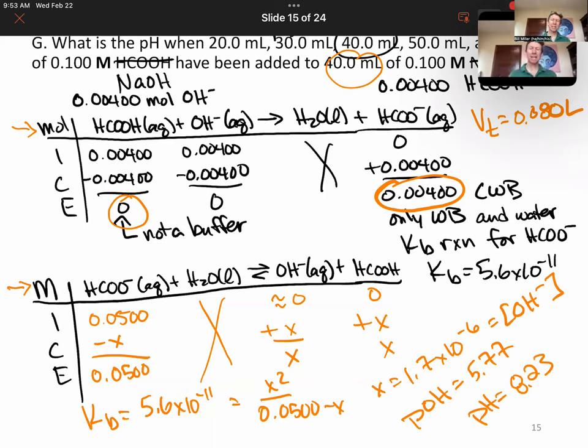And our pH is 14 minus that. I get 8.23. That tells me that at the equivalence point, my pH will be 8.23, not 7. So when you have a weak acid, strong base titration, the equivalence point will be at a pH above 7.